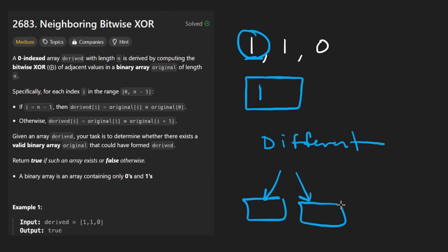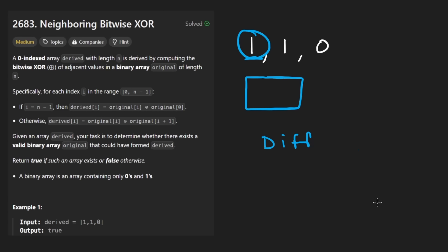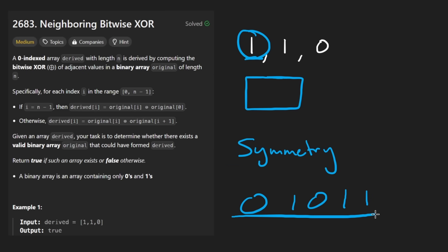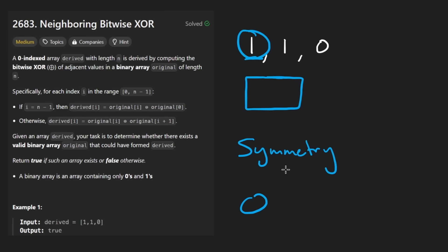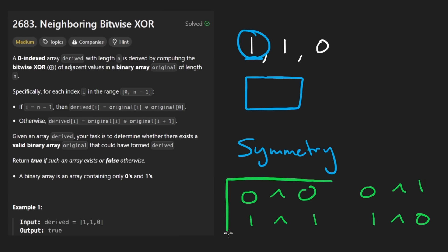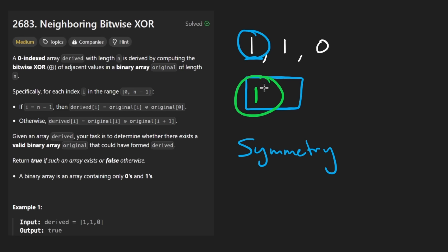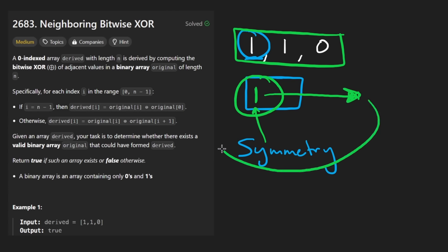We're not going to make a decision tree with two possibilities at every step — that would be inefficient. Based on symmetry, if I gave you a string like zero-one-zero-one-one and I invert it to one-zero-one-zero-zero, the XOR relationships are identical. Zero XOR zero is the same as one XOR one, and zero-one is the same as one-zero in terms of XOR output. So I can arbitrarily put either a zero or a one in the first spot — it doesn't matter. I simulate forward, and if there's a contradiction at the end when I loop back, I return false; otherwise I return true.